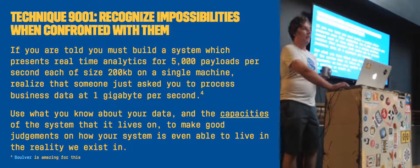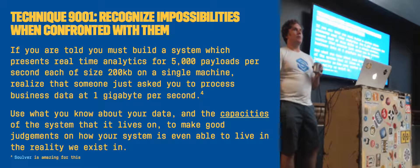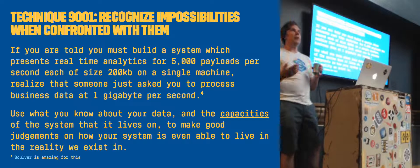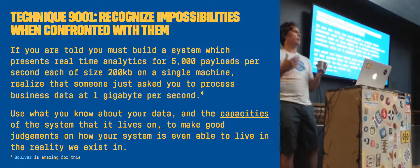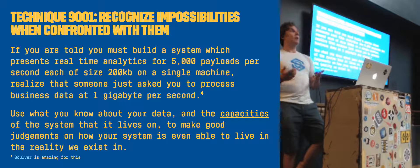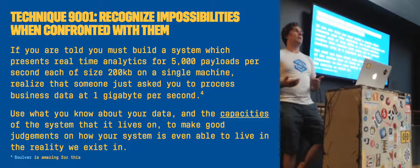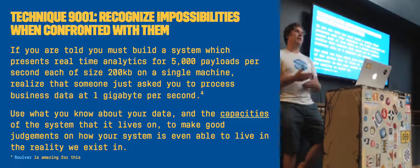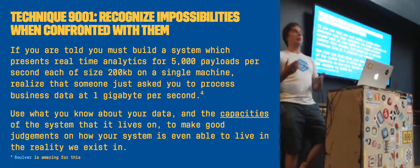The most important thing is to recognize impossibilities when you're confronted with them. Sometimes you'll be asked for something that is frankly beyond the capacities of any machine on earth to produce - it's simply not possible. If you can inspect what they're asking for, inspect the data, inspect the rate, and get growth rates, you can do simple napkin math to determine whether the thing is even accomplishable or whether it's trivial.